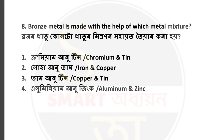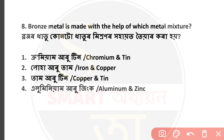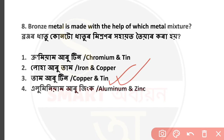Question number 8: Bronze metal is made with the help of which metal mixture? Which metals are mixed to make bronze? The answer is Option number 3 — copper and tin mixed together form bronze metal.